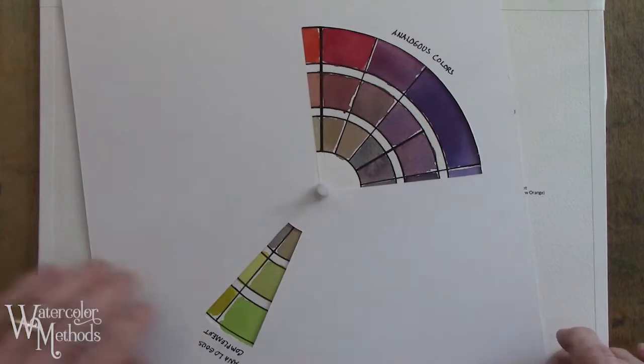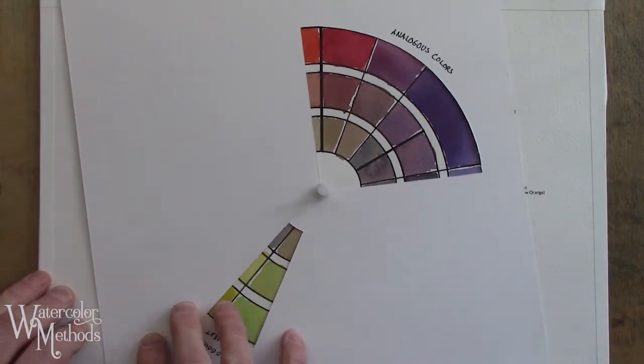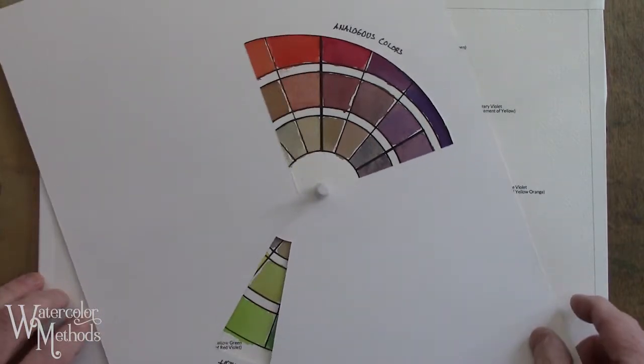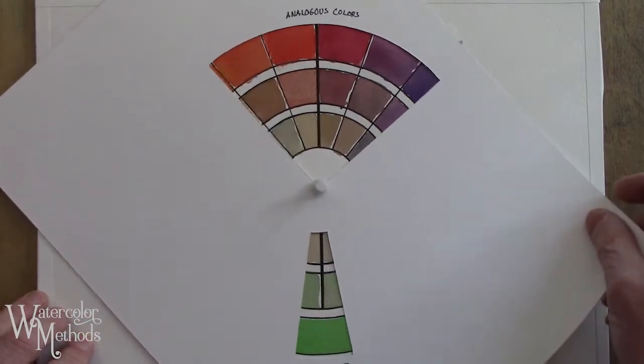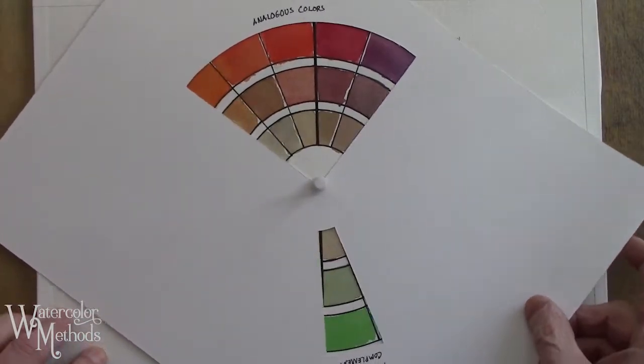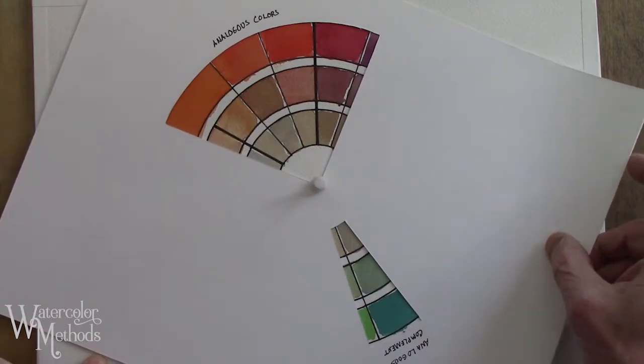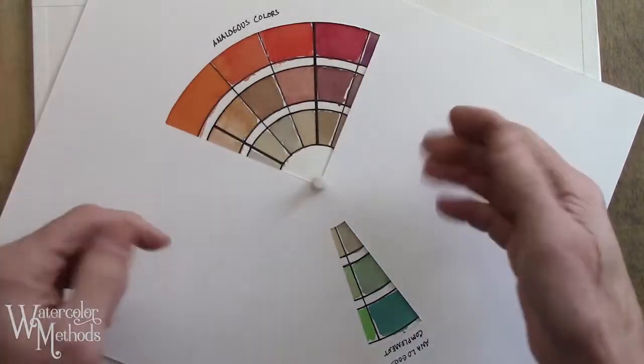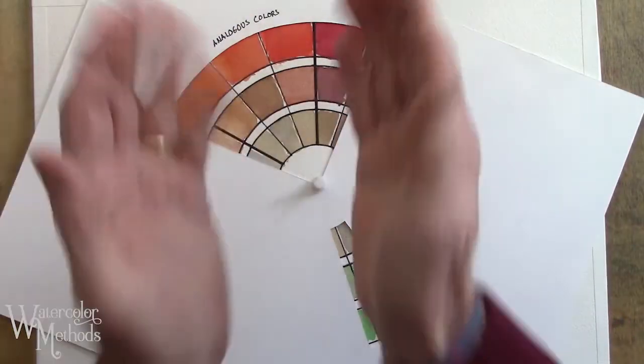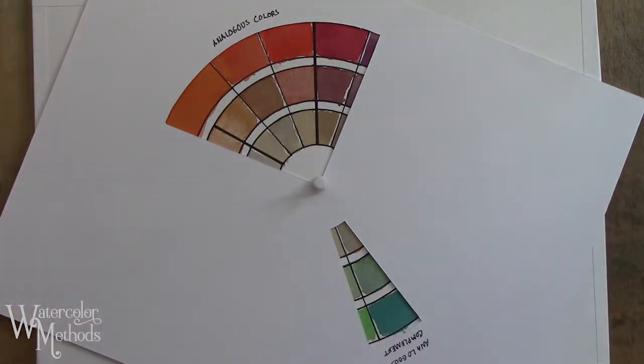I can put this on, spin it around, and see various different groups of colors that may work for whatever painting I might have in mind. Quite simply, those are analogous color schemes. You find a group that are together on the color wheel, and that's an analogous color scheme.